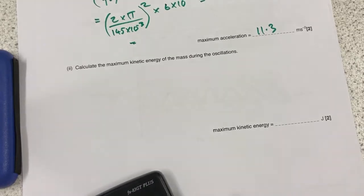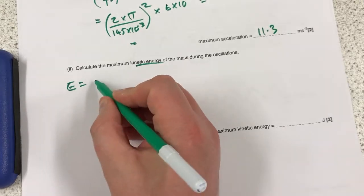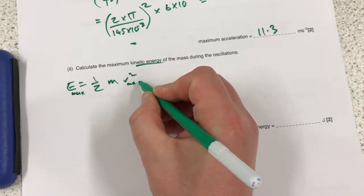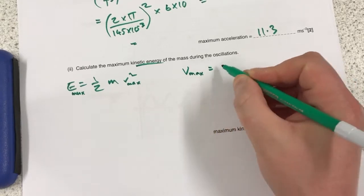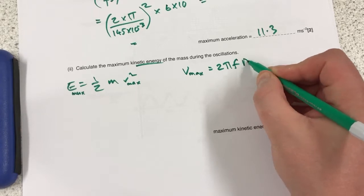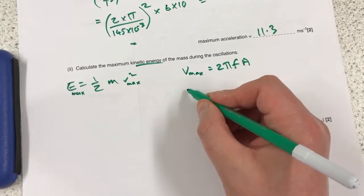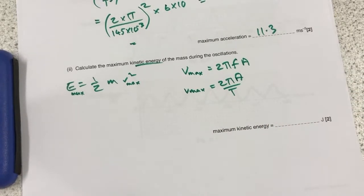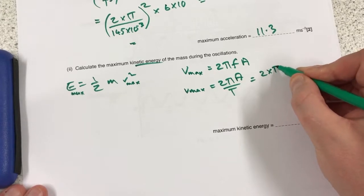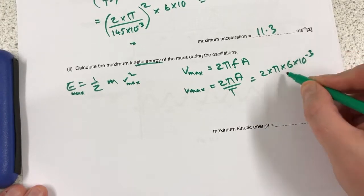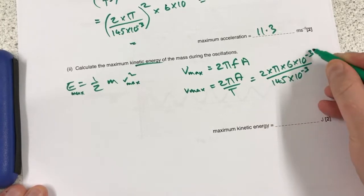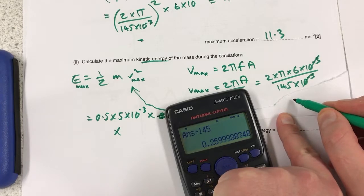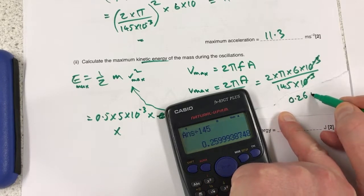Next part, part 2, calculate the maximum kinetic energy. So if I take my half mv squared for kinetic energy max, I need velocity max. And we use 2 pi f a, or as would be more handy here, v max equals 2 pi a over capital T. So that's going to be 2 times pi times 6 times 10 to the minus 3 divided by 145 times 10 to the minus 3. Plug that in onto the calculator, equals. So I get a velocity of 0.26 meters seconds to the minus 1.